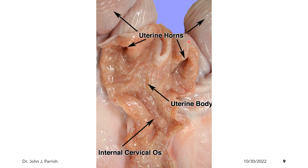Cutting into the uterine horn will reveal the following structures. The uterus is composed of the uterine body and the uterine horns. The implantation anatomy and physiology is not the same as in the cow. In the cow, bumps on the uterine lining called caruncles are the site of placental attachment to the mother. However, these structures are not present in the pig, as the placenta simply lies alongside the uterine wall. The internal cervical os is the transition between the uterine body and the cervix.